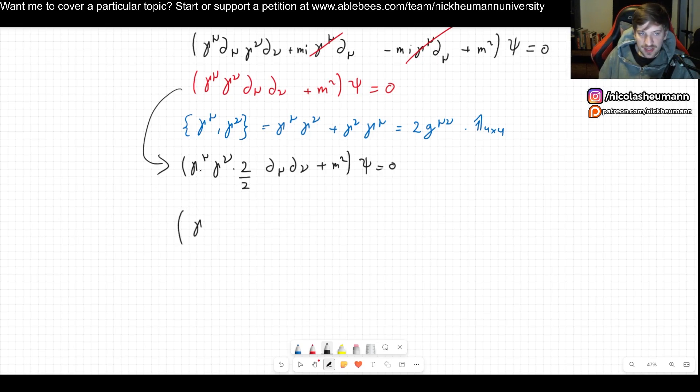Now I'm simply going to write this out. So two times gamma mu gamma nu is simply gamma mu gamma nu plus gamma mu gamma nu. So I'm not doing anything illegal here. Don't call the cops on me. And there's a factor of one half in front and then we have our del mu del nu plus m squared and all of this times psi.